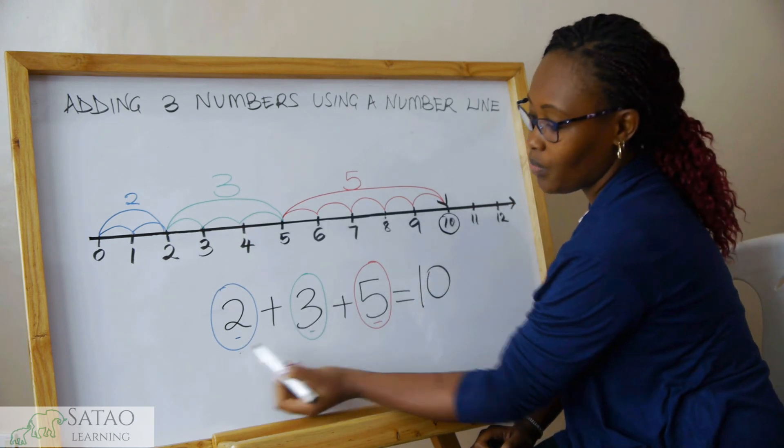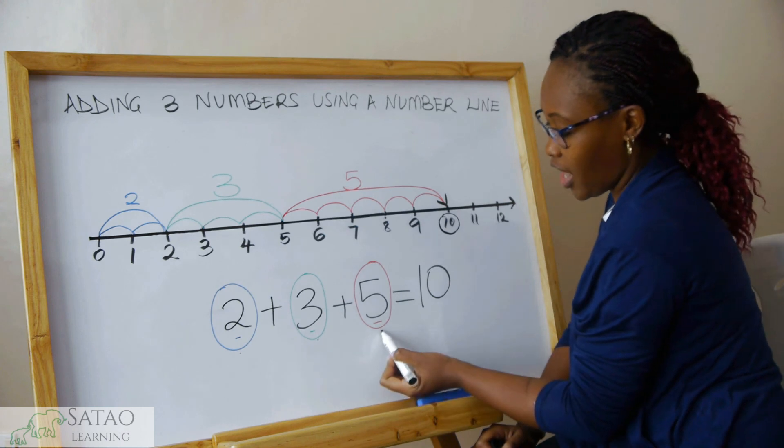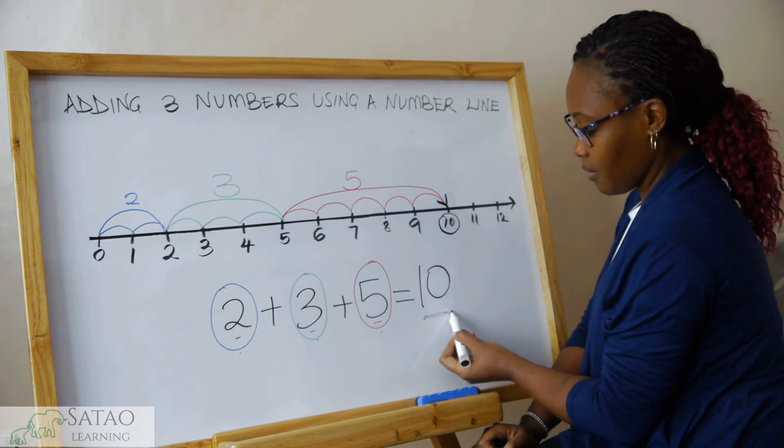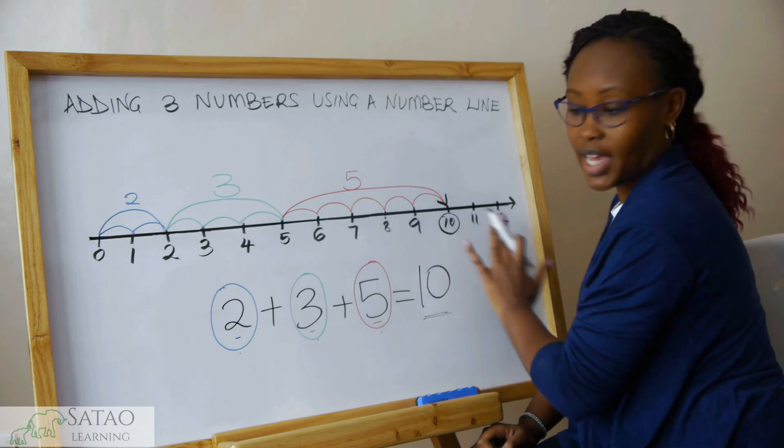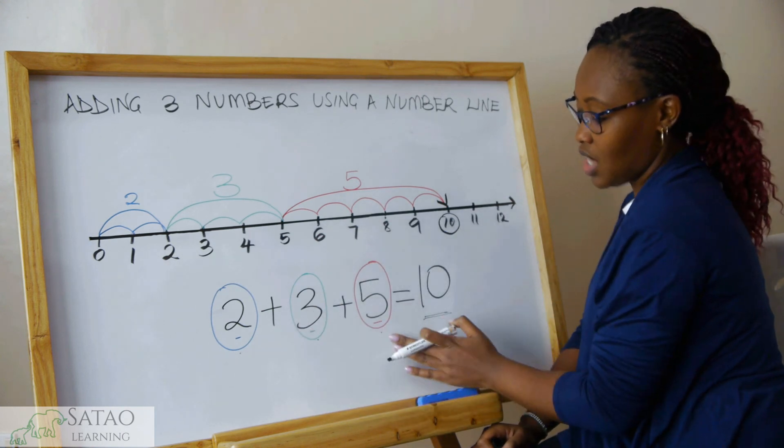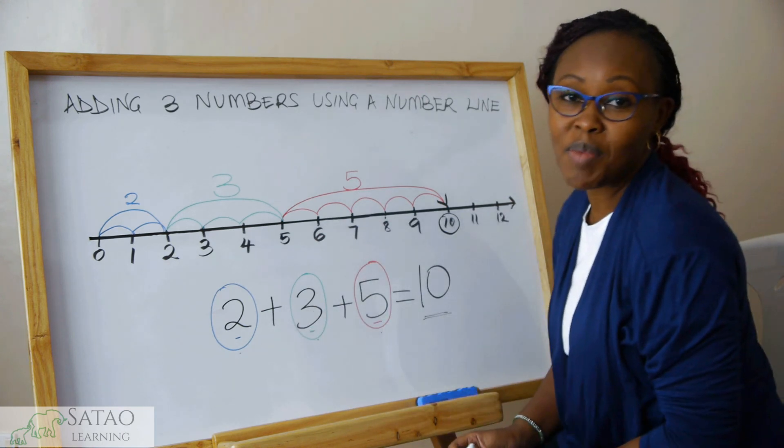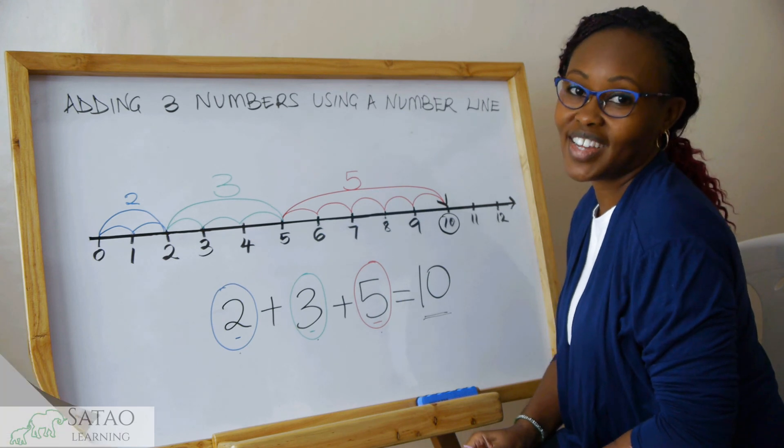When you add 2 and 3 and 5, you get 10. And that is how you use a number line to add three numbers. Thank you very much and have a wonderful day.